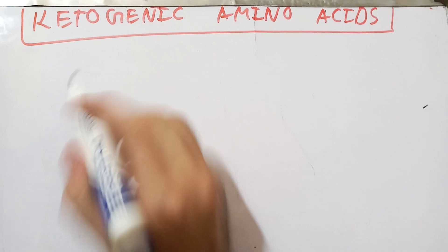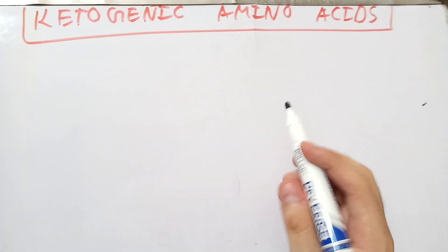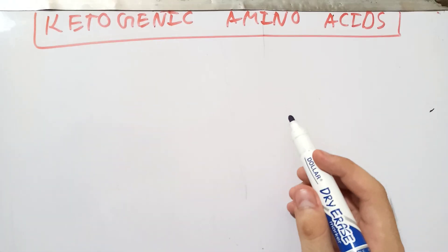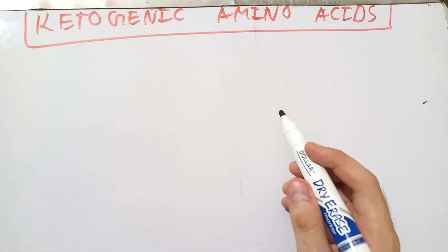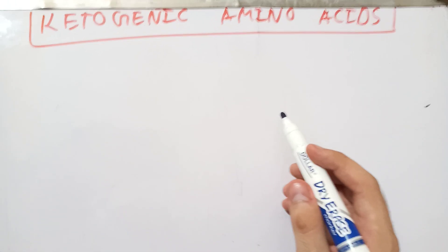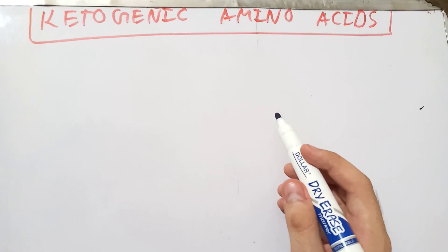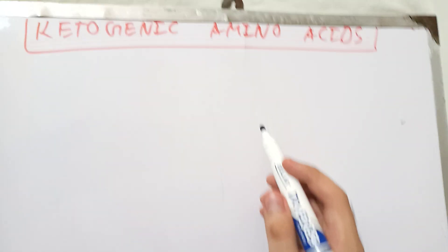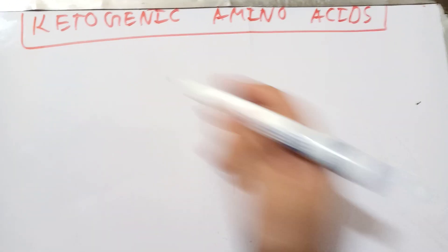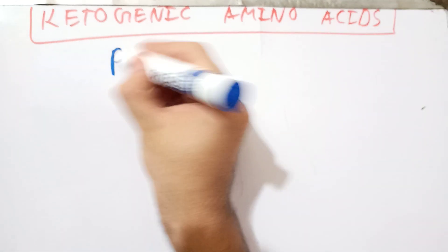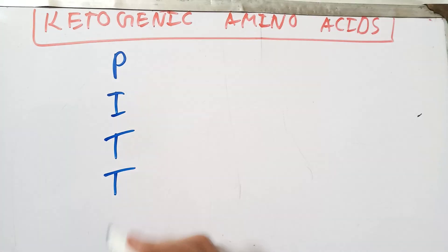Let's talk about the ketogenic amino acids. These are the amino acids that give rise to ketone bodies, that is acetyl CoA and acetoacetyl CoA, or acetoacetate. The mnemonic here is PI double T L L, as I told you previously.